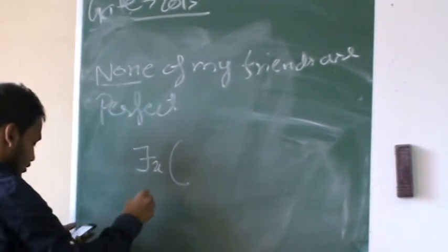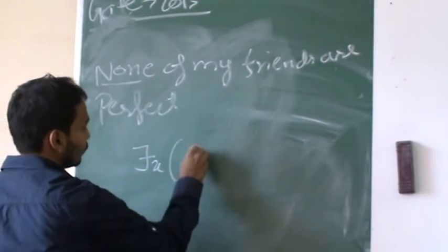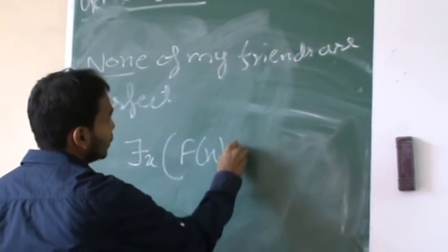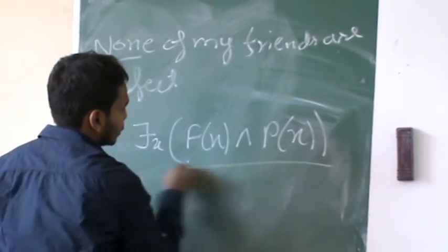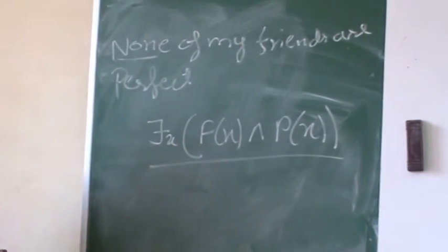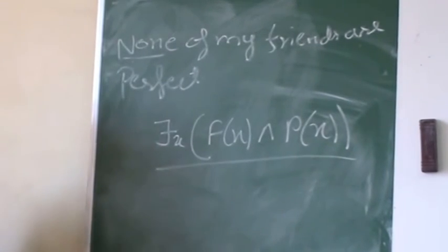Suppose you define F(X) for friend and P(X) for perfect. So what would this mean? This statement means that there exists one such friend who is perfect.